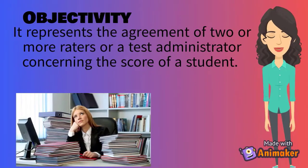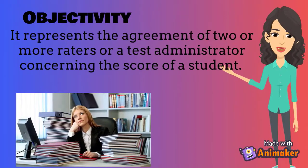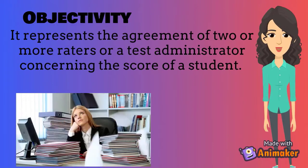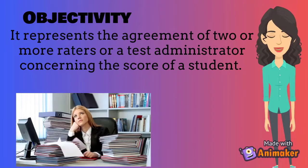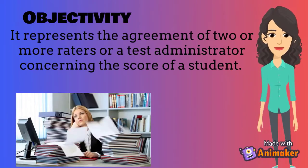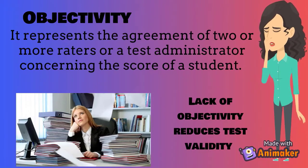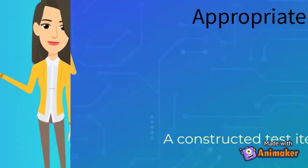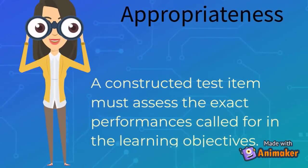Objectivity represents the agreement of two or more raters or a test administrator concerning the score of a student. The lack of objectivity reduces test validity.